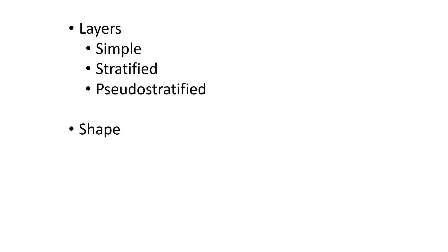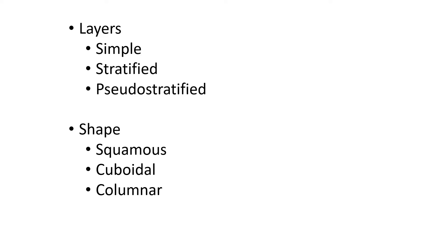The other category is the shape of the cell, and there are four different types. Squamous is more of a flat cell — the side of the cell is wider than it is tall. Cuboidal is where the cell is about as wide as it is tall. Columnar is where the cell is taller than it is wide. And finally, transitional is a special case where the cell actually changes shape depending on whether the organ is full or not.